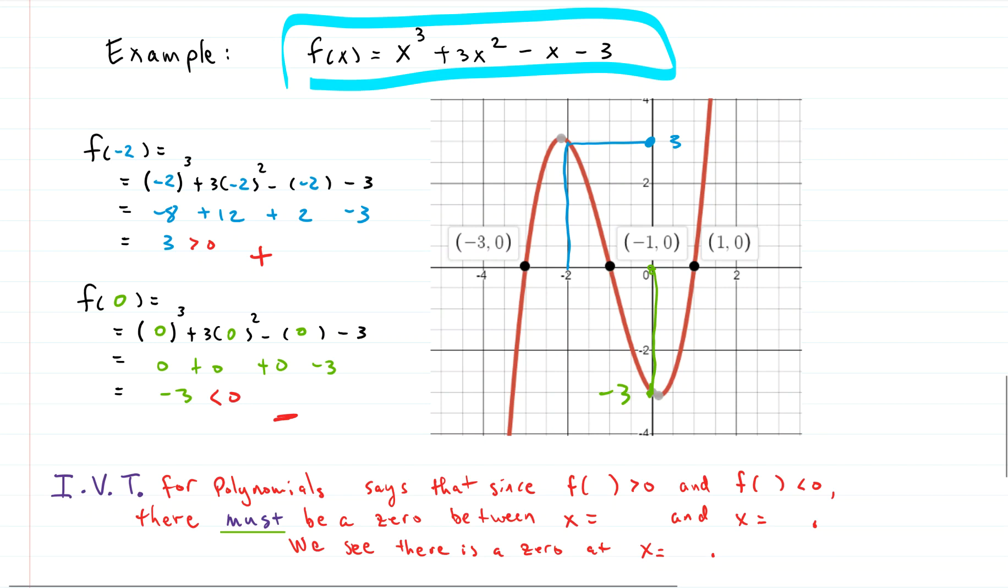So we have a sign change, right? We go from a positive sign to a negative sign. In other words, we go from up here to down here. So by the intermediate value theorem for polynomials, we know that somewhere in between the original spot, x equals negative 2 and x equals zero, somewhere in between there, we have to have an x-intercept. Because we changed signs when we evaluated the functions.